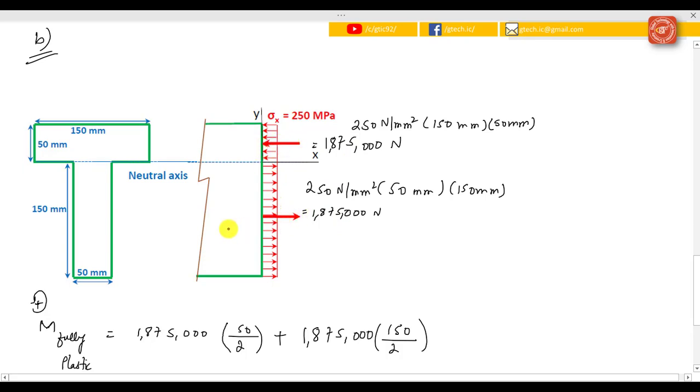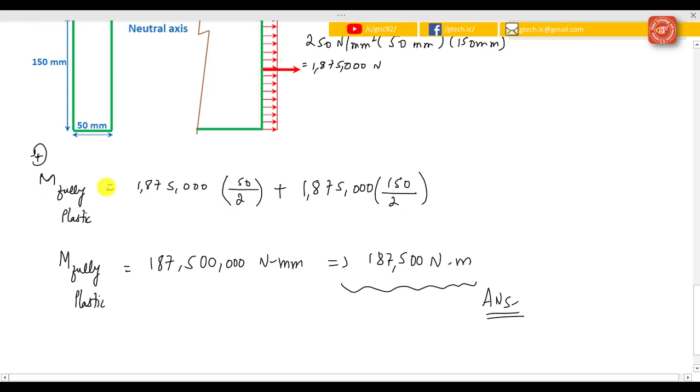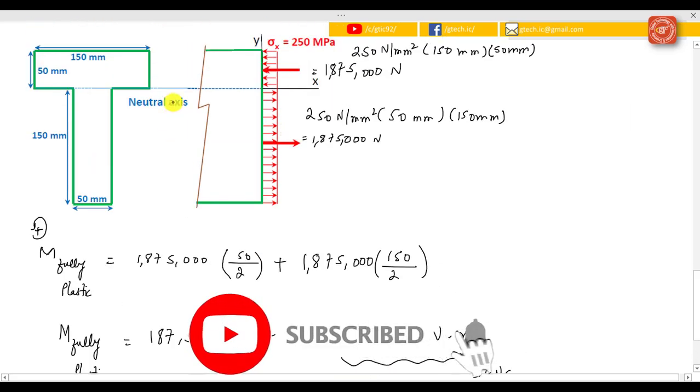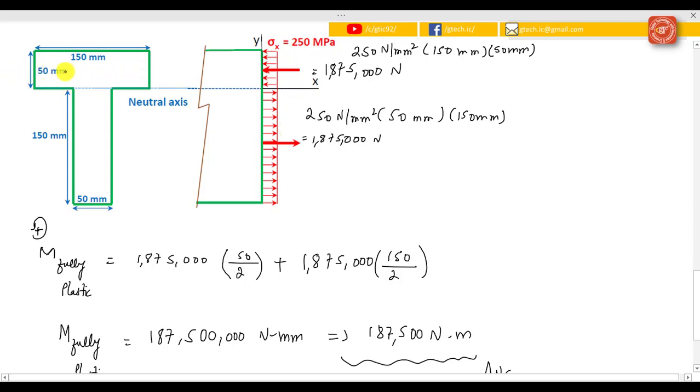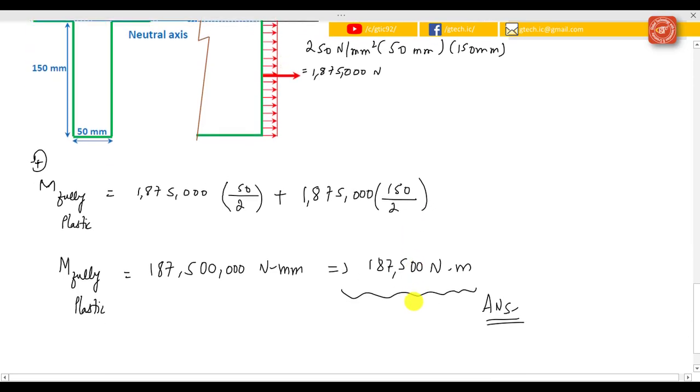Then calculate the moment for fully plastic. We're taking the anti-clockwise direction as positive, so here is the force times the distance (50 divided by 2, this would be the distance from the neutral axis). For this force, the distance would be 150 over 2, and this would be the distance from this point to this point. The moment for the plastic region is 187,500 newton meter. Thank you.